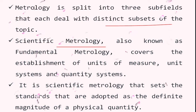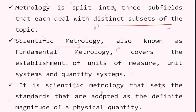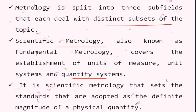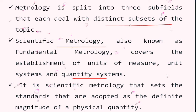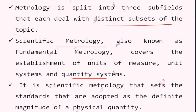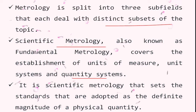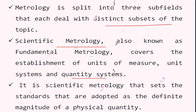Scientific metrology covers unit systems and quantity systems. It sets the standards that are adopted as the definition of a particular quantity — this is the starting point for defining particular units and measurement systems.